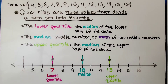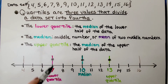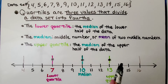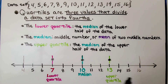Quartiles are three values that divide a data set into fourths. The lower quartile is the median of the lower half of the data. We have the median, which is the middle number or mean of two middle numbers. And the upper quartile is the median of the upper half of the data.